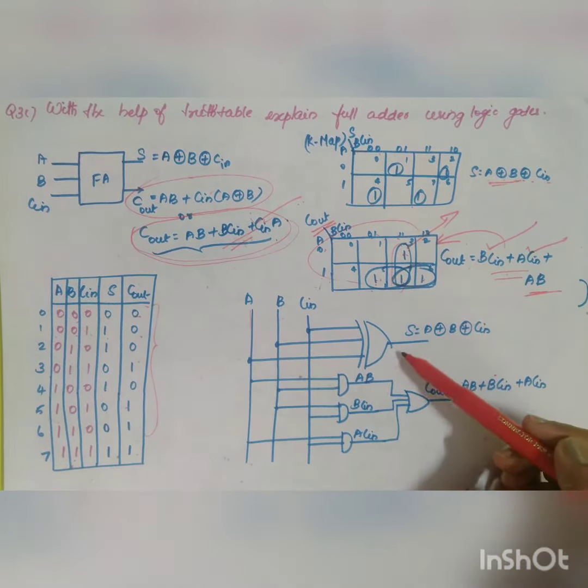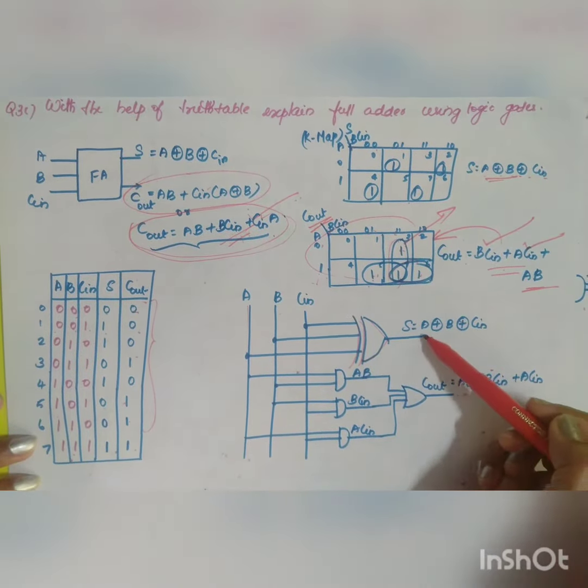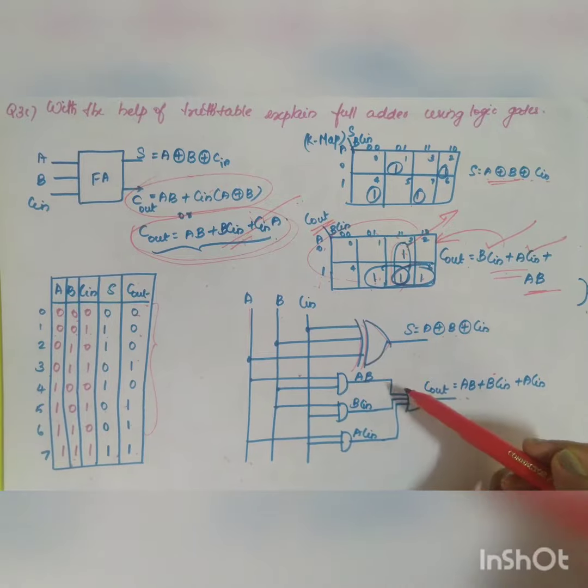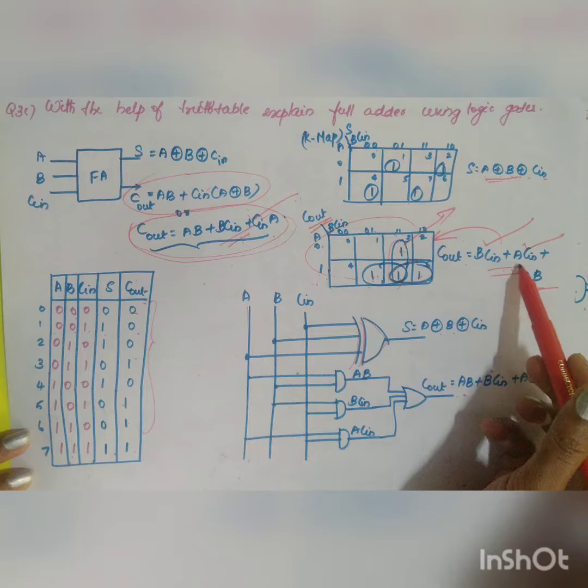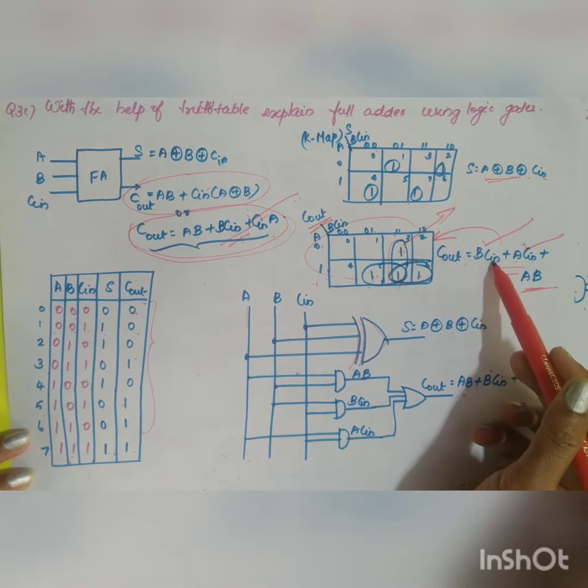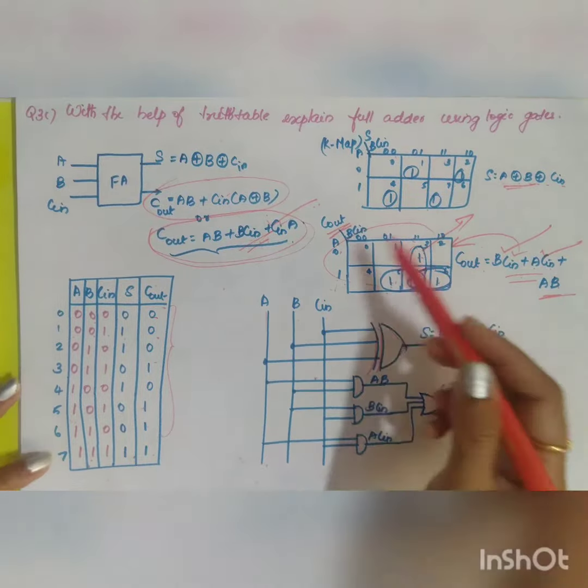What is your sum is equal to XOR, so you can give directly your XOR gate: A XOR B XOR Cin. And what is the next expression? You have AB plus ACin plus BCin. So 3 AND gates along with that of your OR gate will give you this expression.